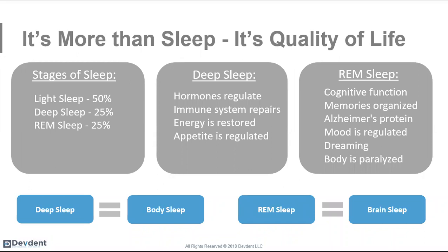Then there's REM sleep — we call that 'brain sleep.' This is when cognitive functions are organized, memories are repaired, and Alzheimer's proteins are processed. Studies have linked Alzheimer's back to sleep apnea because of poor sleep — if you don't get good REM sleep, your body can't maintain good brain health. REM sleep is also when mood is regulated. People may feel depression and mood fluctuation, thinking it's normal, when actually they're not getting good brain sleep. It's also when we dream and the body is paralyzed.